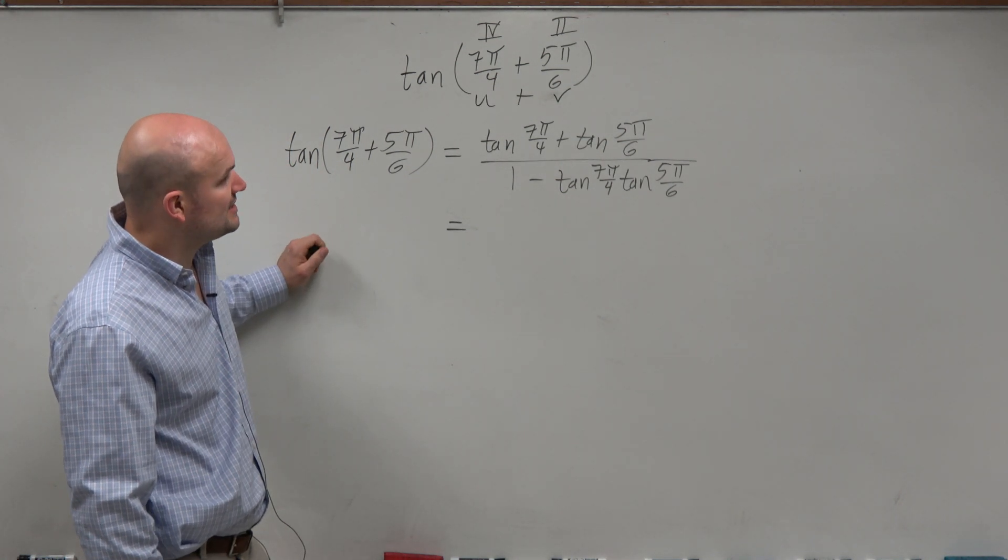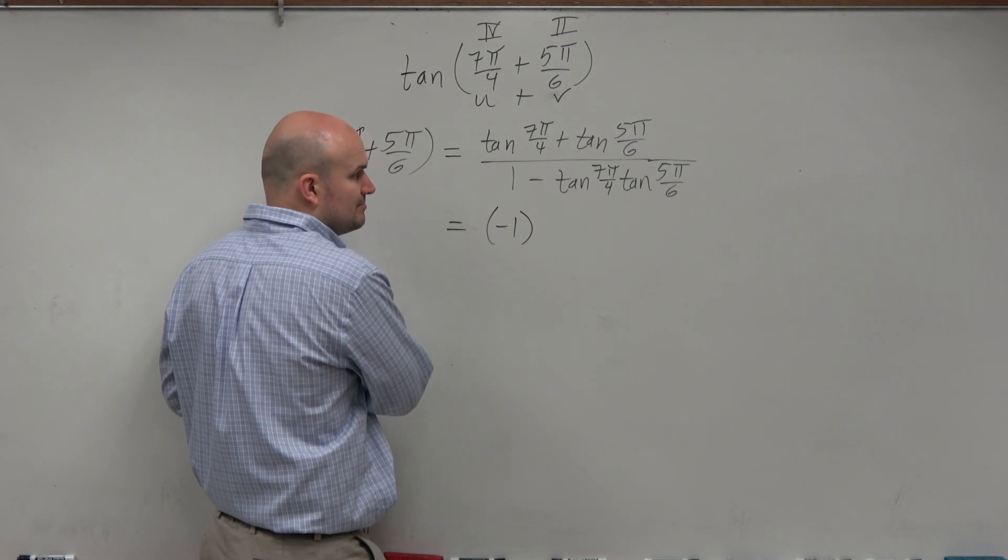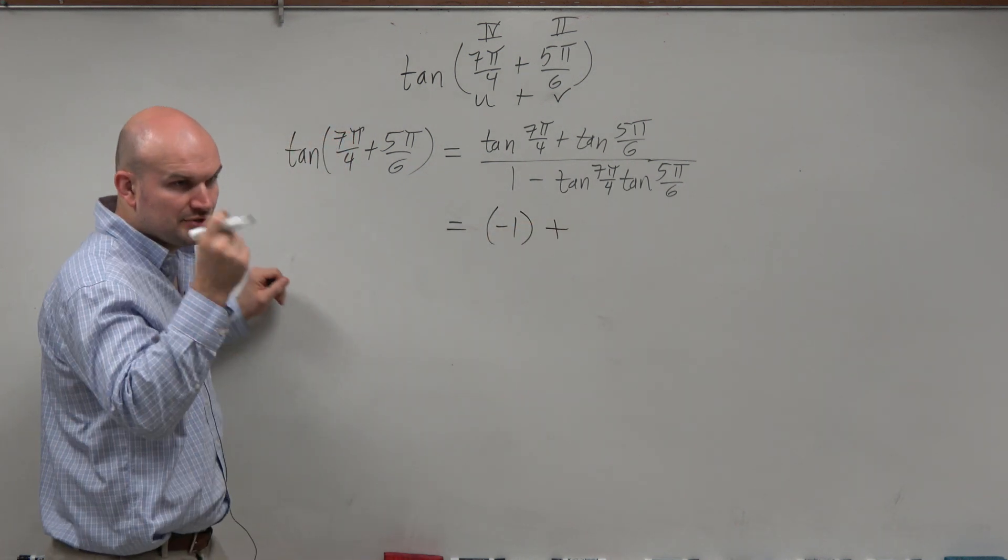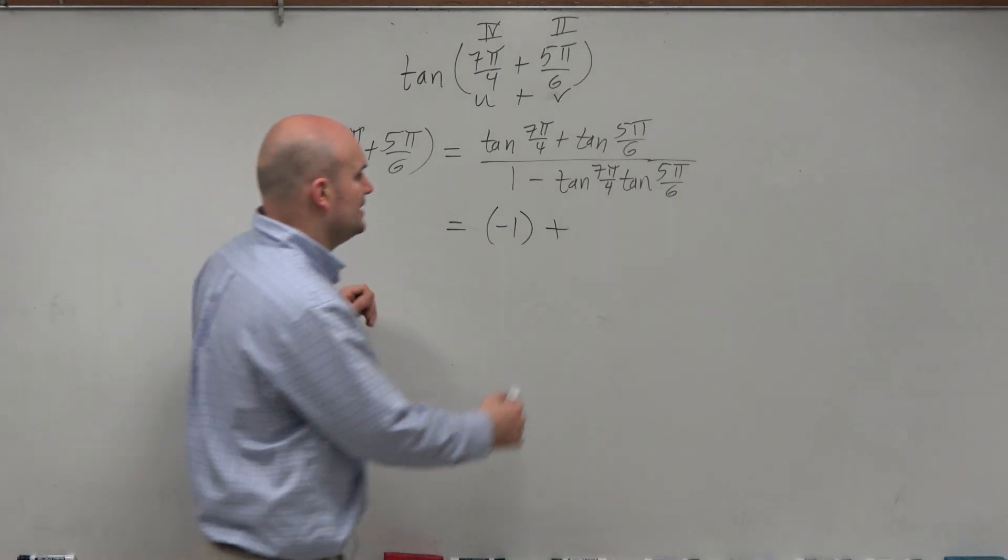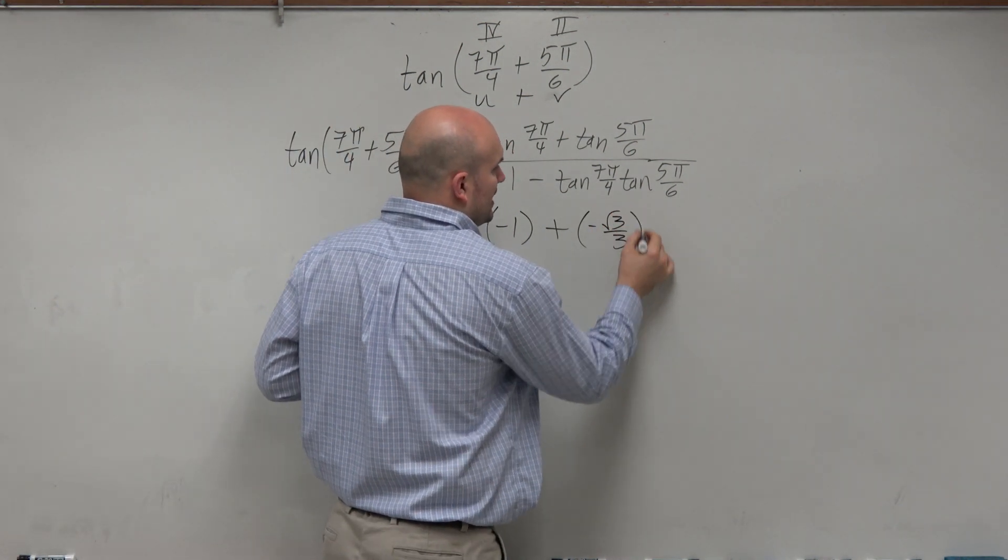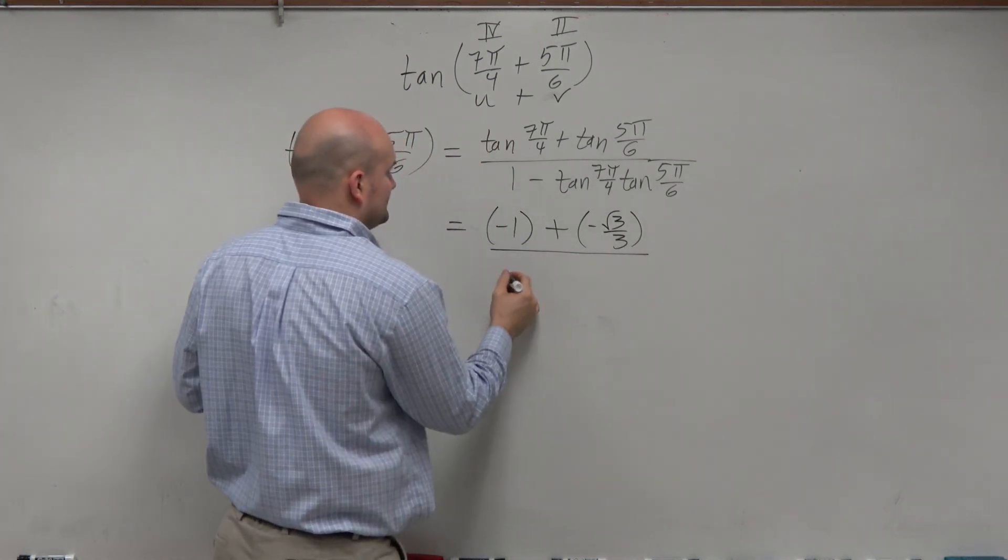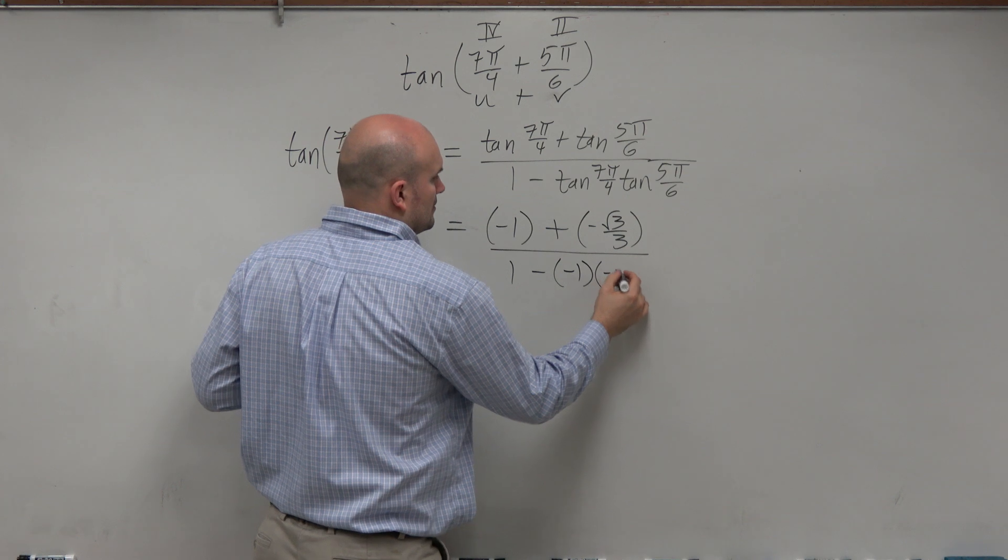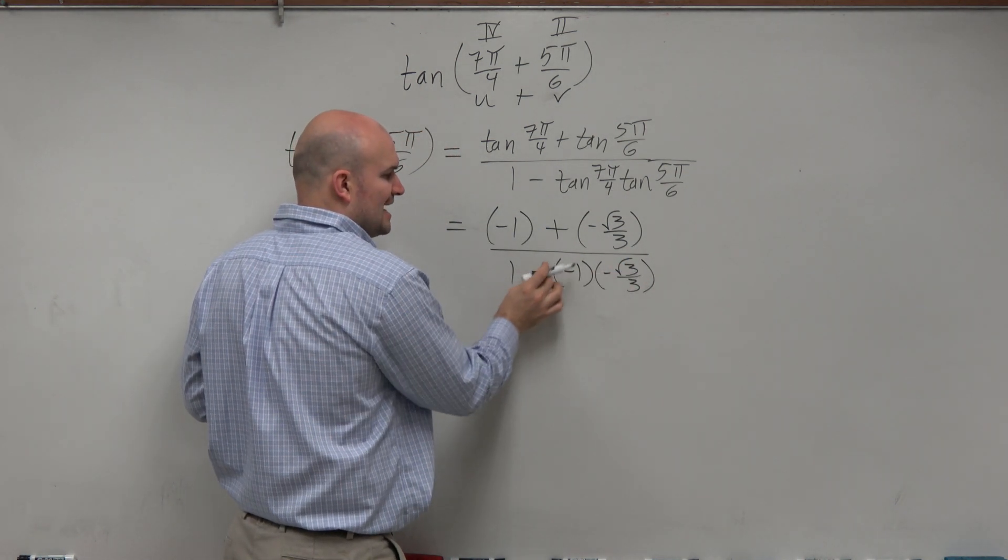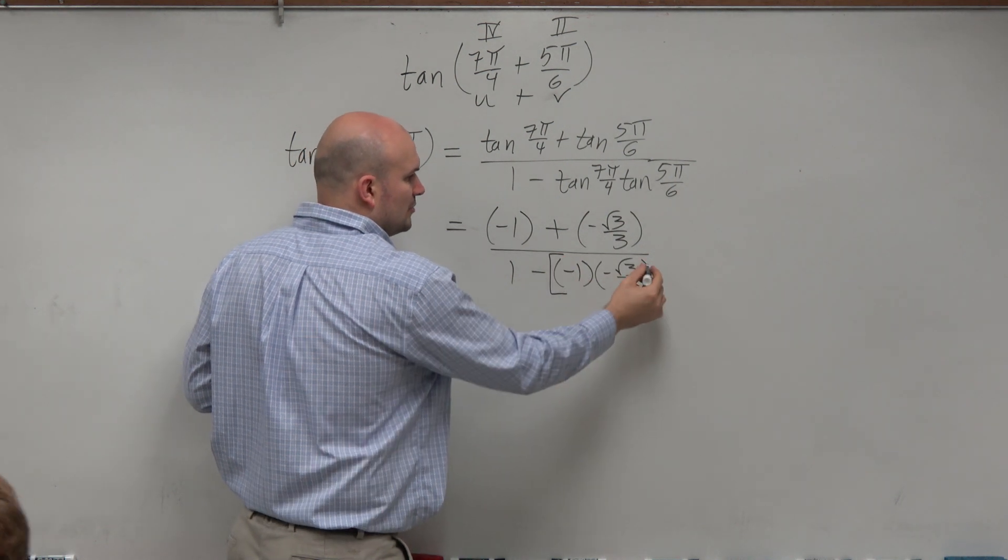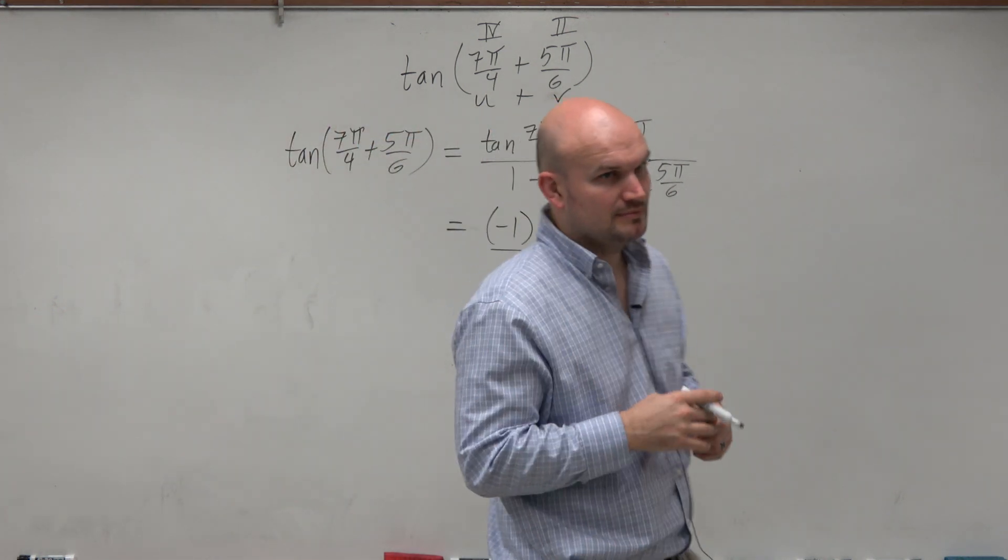Now, we need to know what is 7π over 4. Evaluating the unit circle should be something we can do like this. 5π over 6, that is going to be a negative square root of 3 over 3. This is all coming from the unit circle, which we've already covered in this class. Now, sometimes, since this is minus this product, I'll put it in parentheses just to make sure that I remember to group those together.